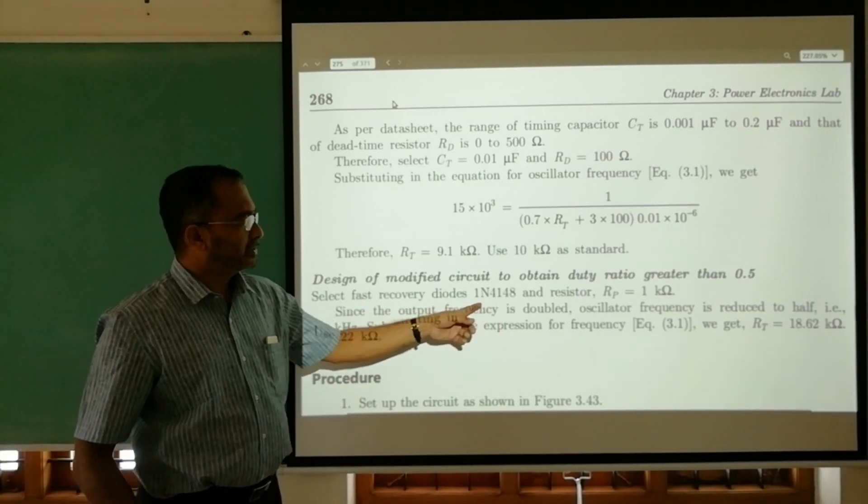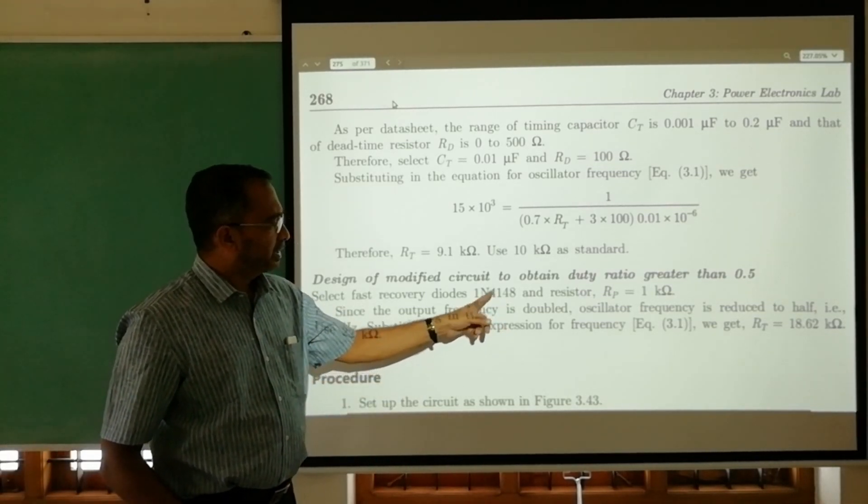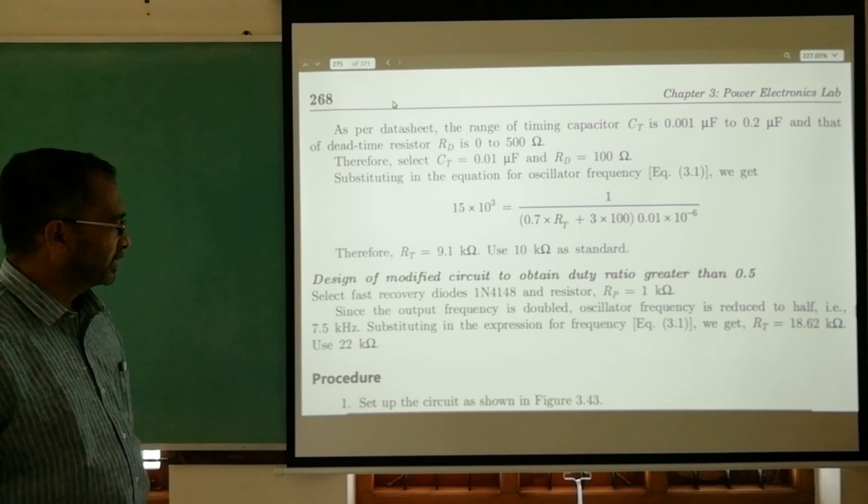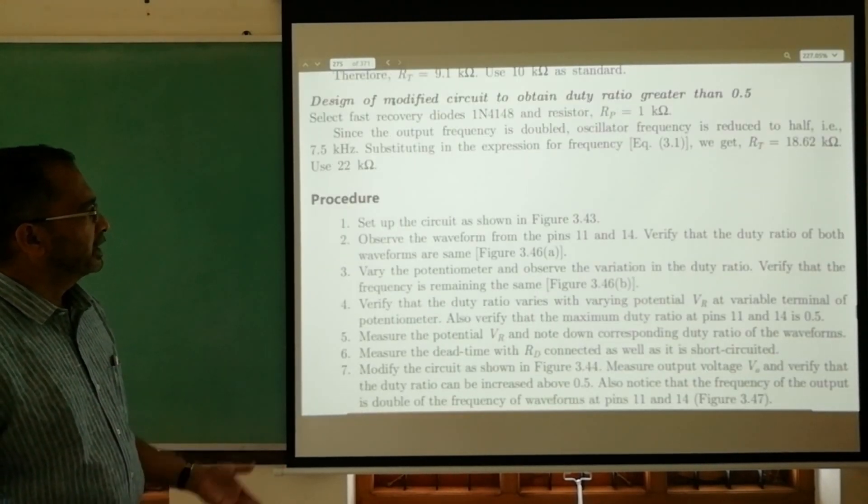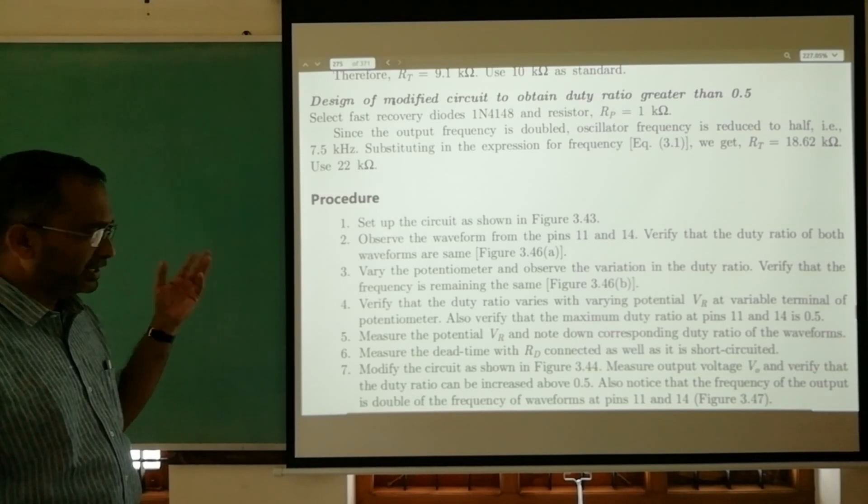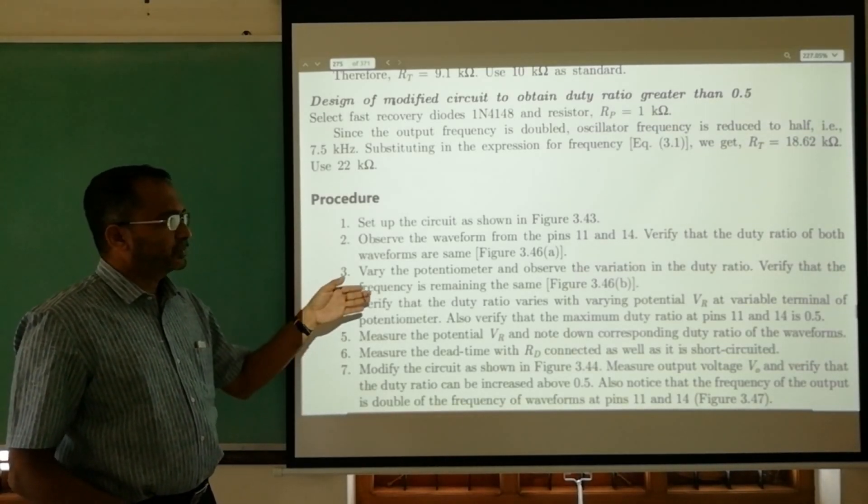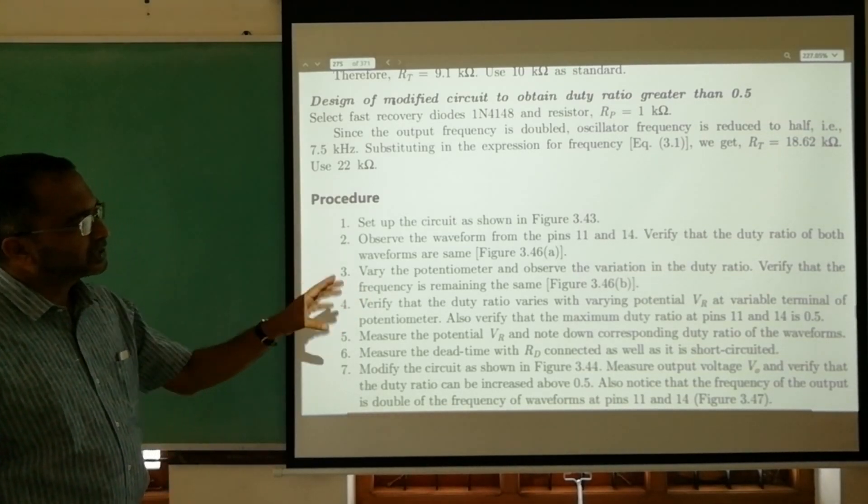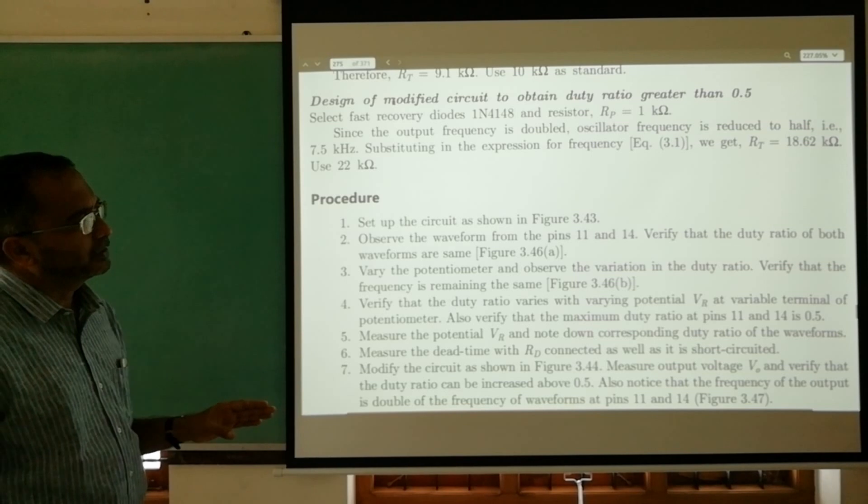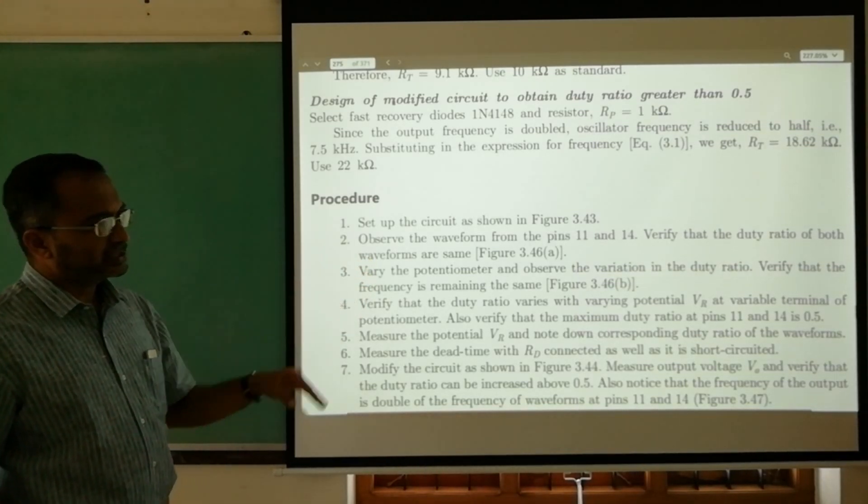The procedure of this experiment is: just set up and vary the input voltage given to pin number two by varying the linear potentiometer, and observe the PWM outputs. After observing that individually, we can modify the circuit to get a final output.